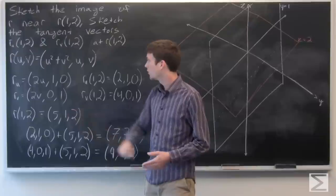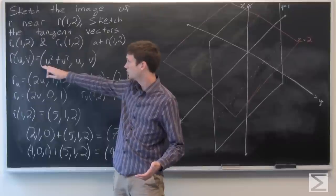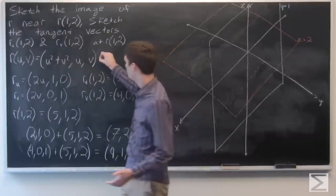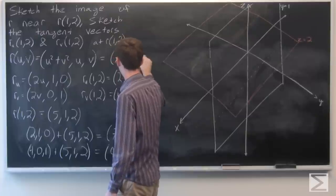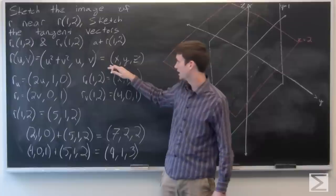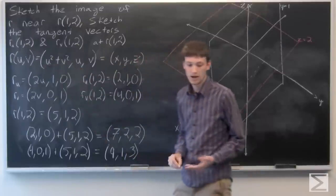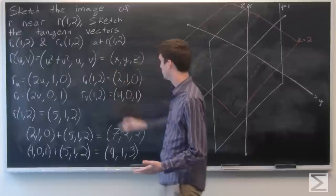Now we want to sketch the image of r. We have r is u squared plus v squared, u, v. So if we let that be x, y, z, we see that x equals y squared plus z squared. And we have an elliptic paraboloid.